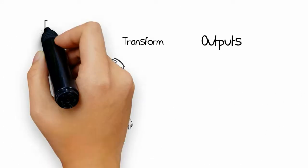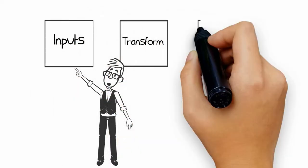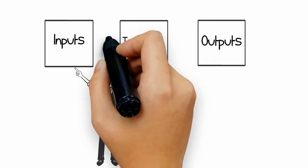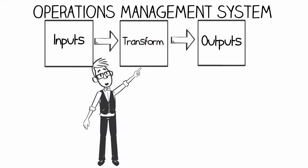People, materials, and capital are examples of inputs that become transformed to create outputs. This flow is called the operations management system.